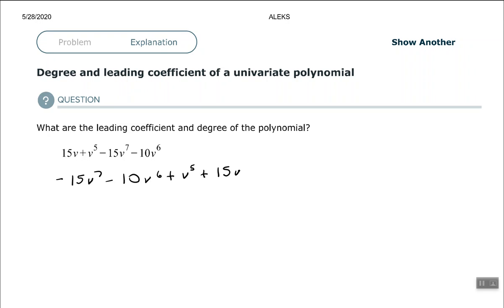All right, so the leading coefficient and degree. The leading coefficient is negative 15, and the degree is 7, that's the exponent. All right, good people, hope you found this video to be helpful. See you on the next one.